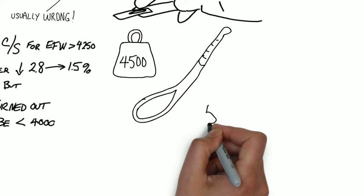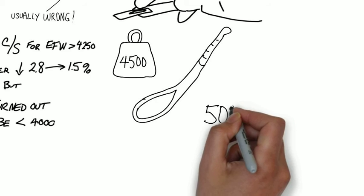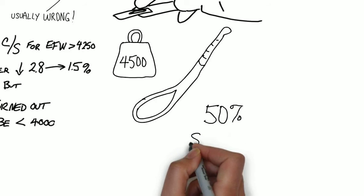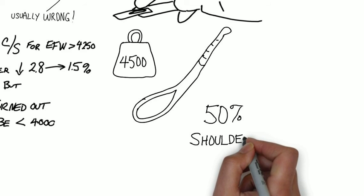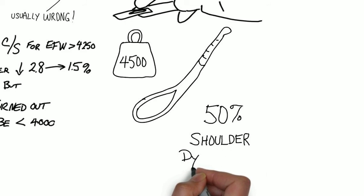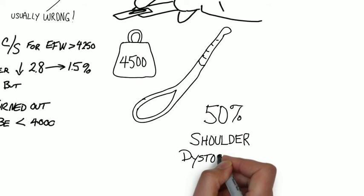Should the diagnosis affect the management of labor? Since the risk of shoulder dystocia in a fetus greater than 4,500 grams with an operative vaginal delivery, that's forceps or vacuum, is 50 percent, don't do it.